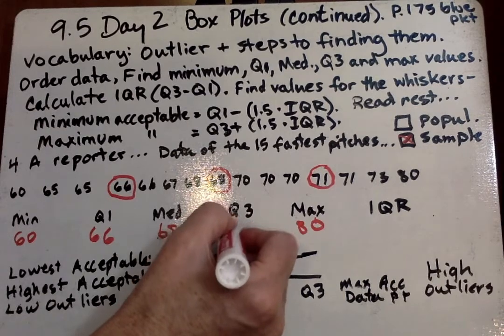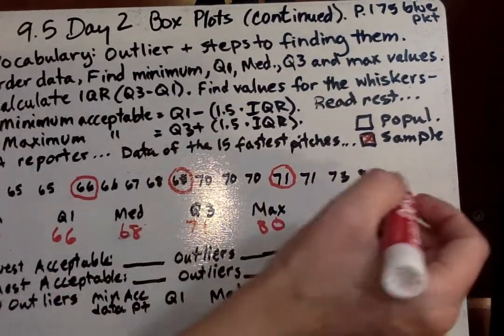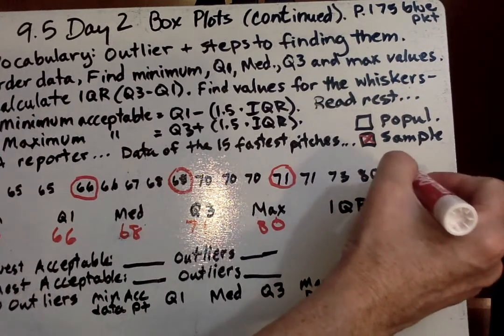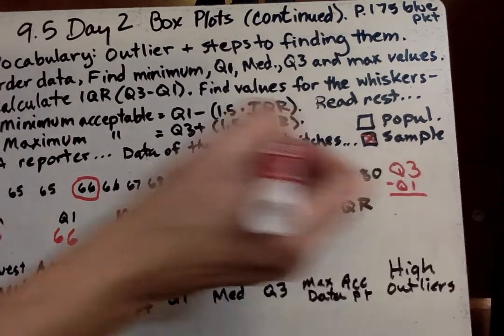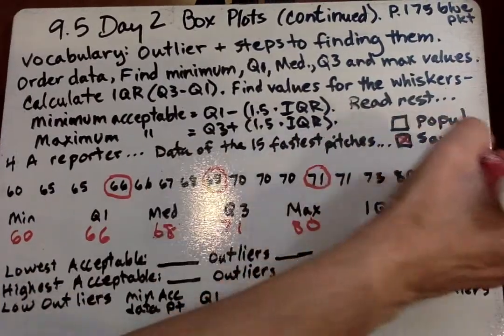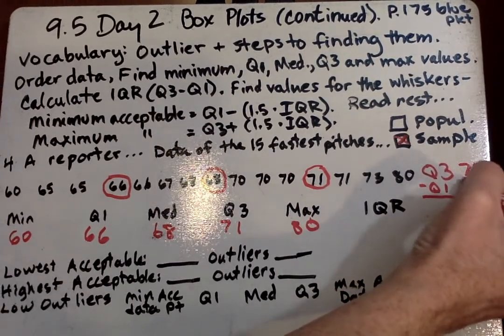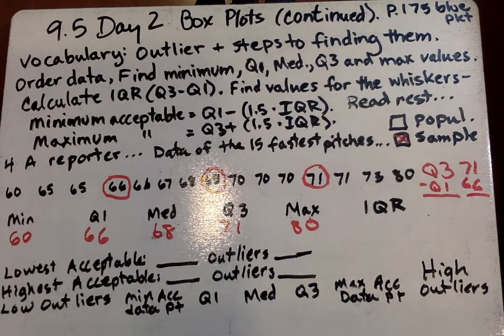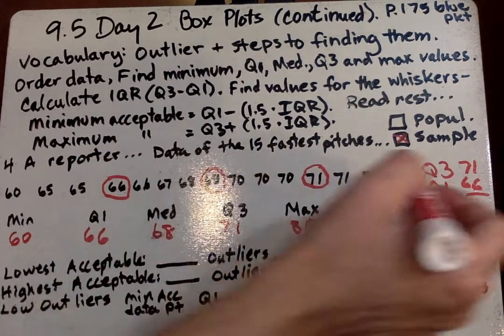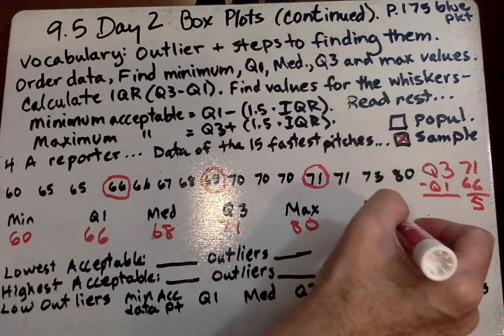Now to find the interquartile range, that's quartile 3 minus quartile 1. So quartile 3 is 71. Quartile 1 is 66. So we take 71 minus 66. And what do we get? 5. So interquartile range is 5.